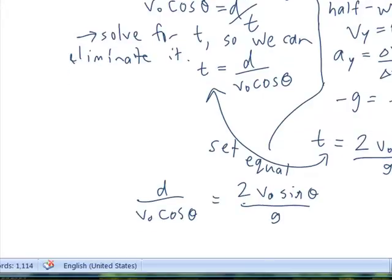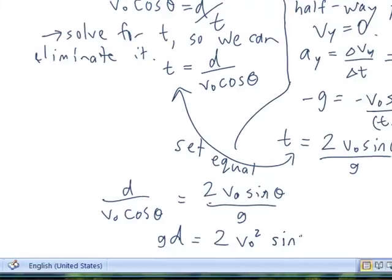And solving that out, I have g times d equals 2 V sub 0 squared. Just multiplying the denominators times both sides.